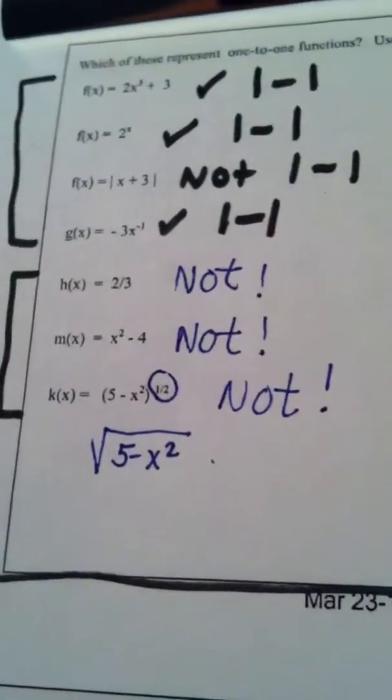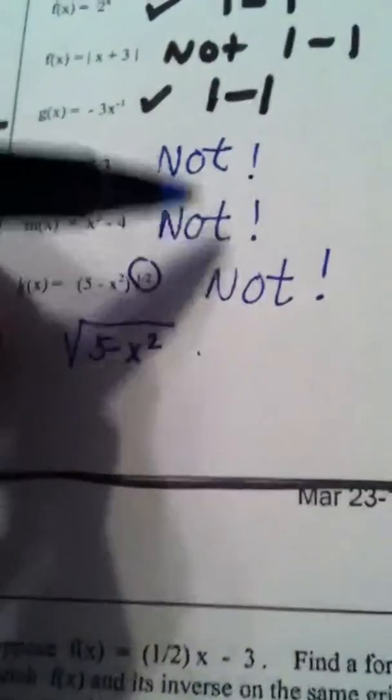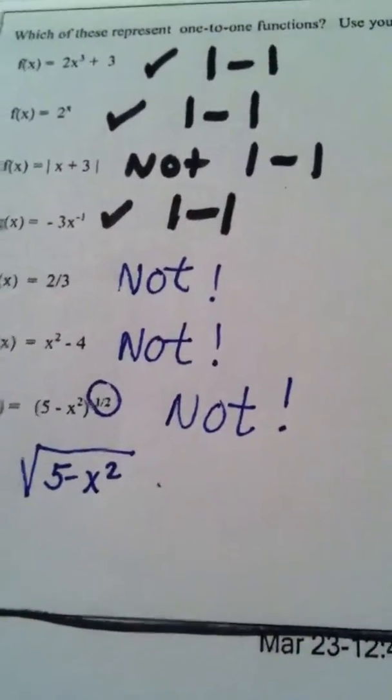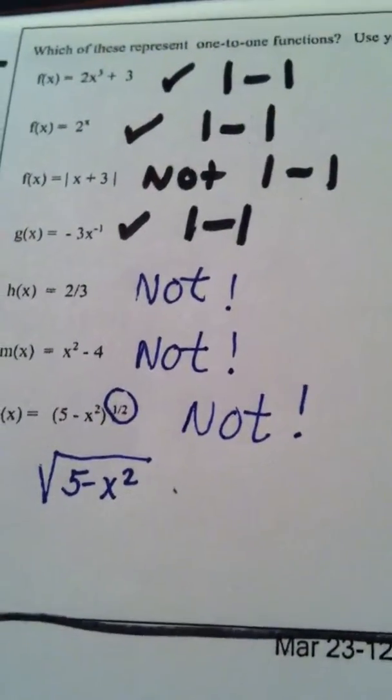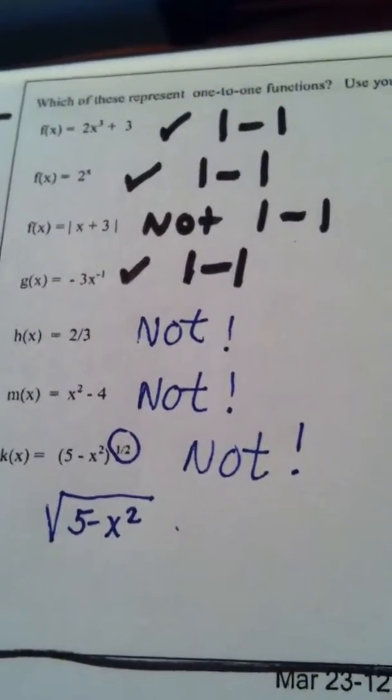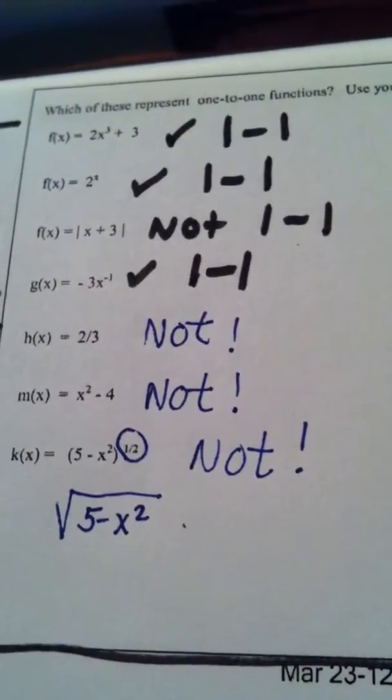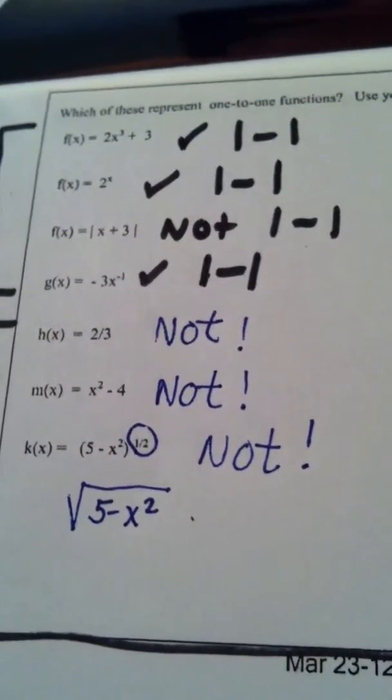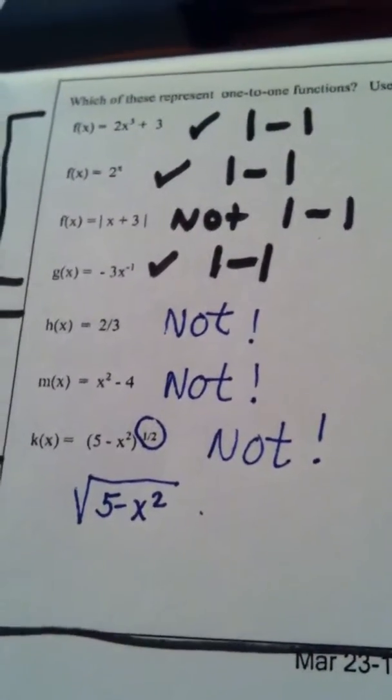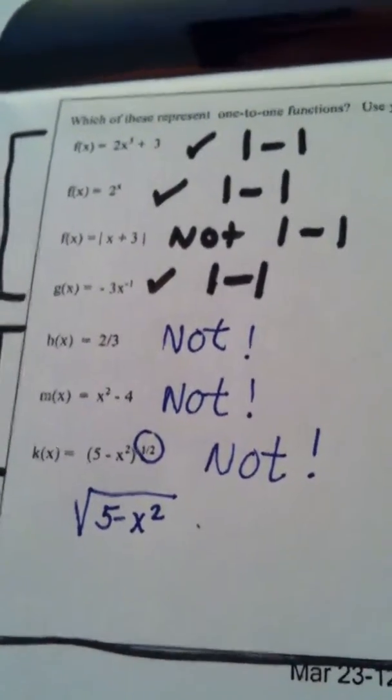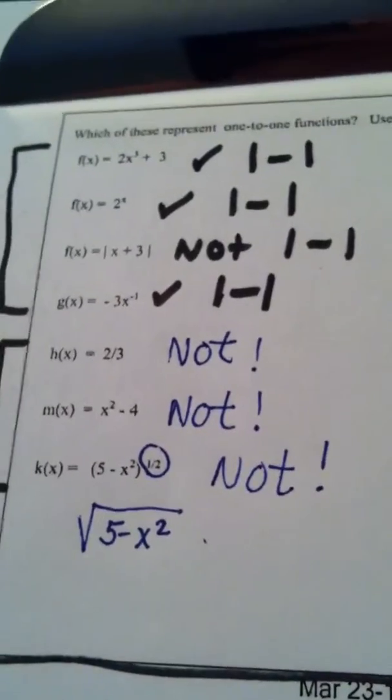But the inverse is not going to be a function. So the truth is, if I want a function that ends up having an inverse which is a function, the original function needs to be one-to-one. In other words, you apply the vertical line test first to make sure it's a function. You apply the horizontal line test next to make sure it's a one-to-one function, and then you are able to find its inverse and you're guaranteed that that inverse is also a function.